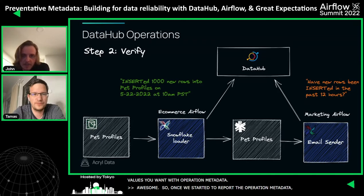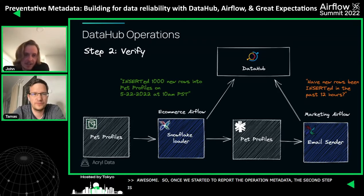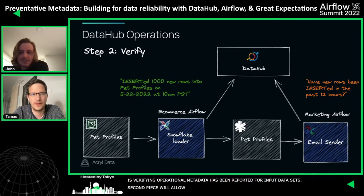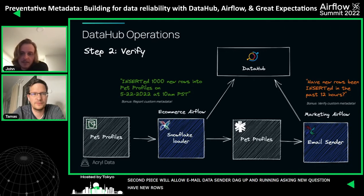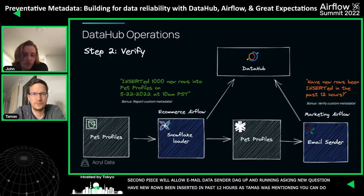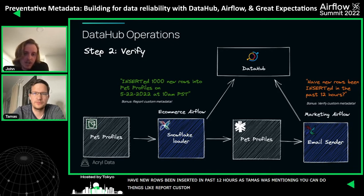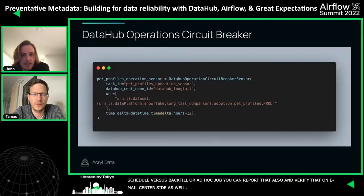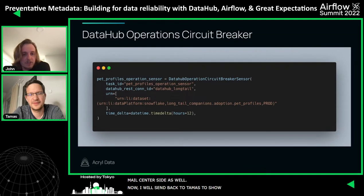Once we've started reporting operational metadata, the second step is verifying that operational metadata has been reported for your input datasets. This allows the email sender DAG, before running, to ask the question: have new rows been inserted in the past 12 hours? You can also report custom metadata — for example, the job type that triggered the change, such as a scheduled versus backfill or ad hoc job — and verify that on the email sender side as well.